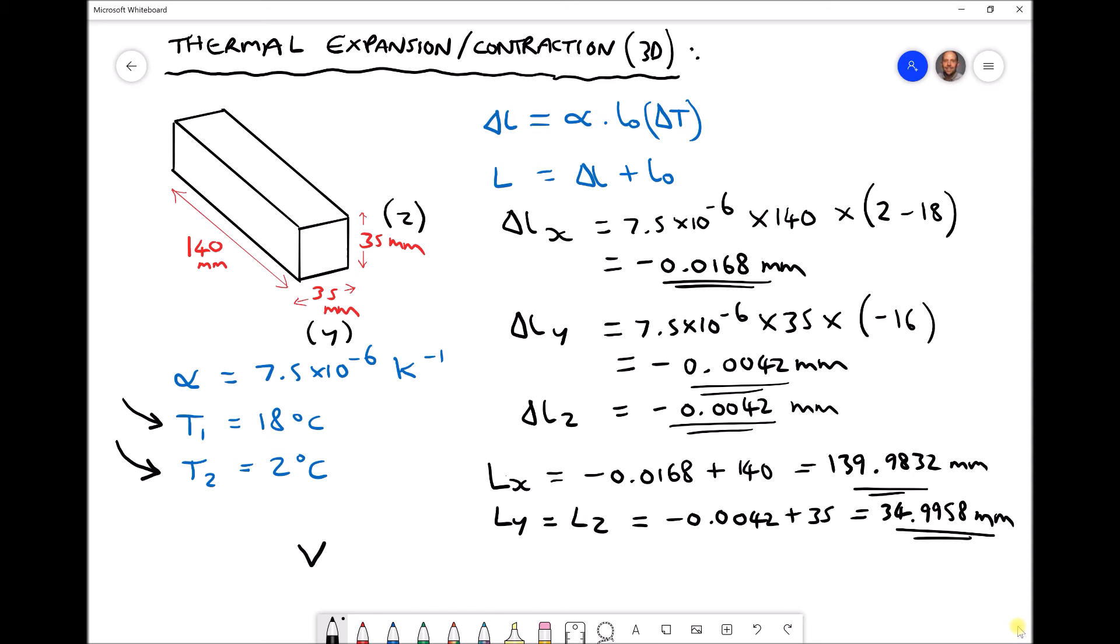So next we can calculate the new volume of the block because the volume of the block is those three dimensions multiplied together. We have 139.9832 times 34.9958 times 34.9958 in our y and z directions, giving us a new volume equal to 171438 cubic millimeters accurate to the nearest whole number.